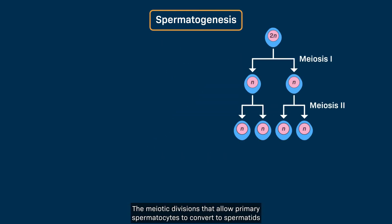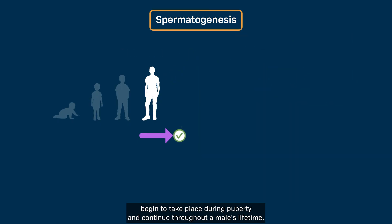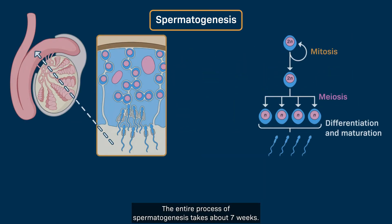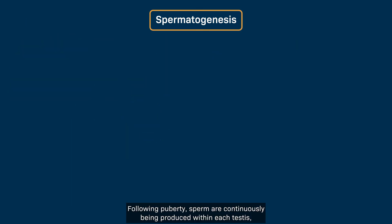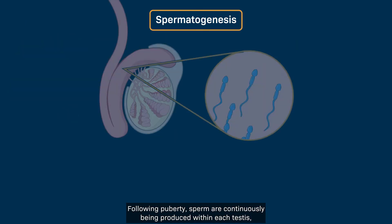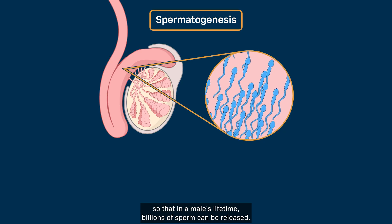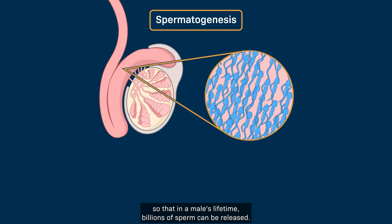The meiotic divisions that allow primary spermatocytes to convert to spermatids begin to take place during puberty and continue throughout a male's lifetime. The entire process of spermatogenesis takes about seven weeks. Following puberty, sperm are continuously produced within each testis so that in a male's lifetime, billions of sperm can be released.